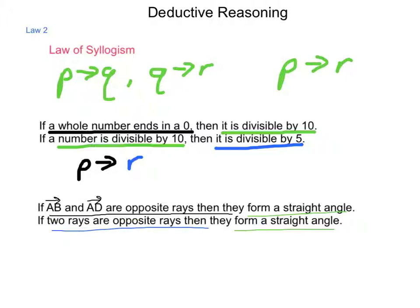Because we don't have the linking piece here that AB and AD are the opposite rays being spoken of, then we cannot conclude anything. Do not jump to conclusions that you do not know.